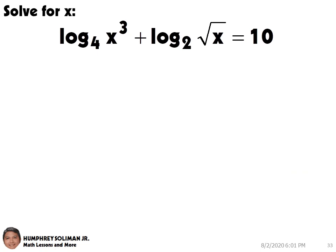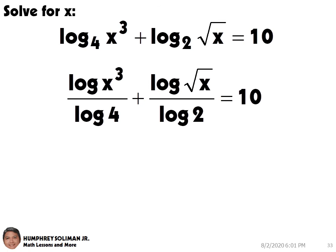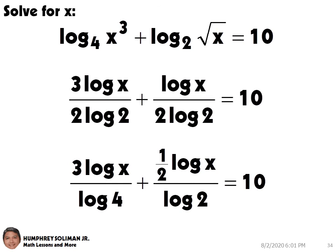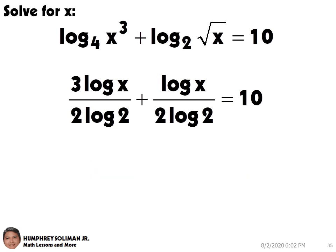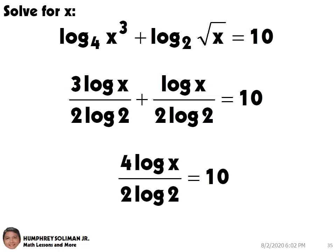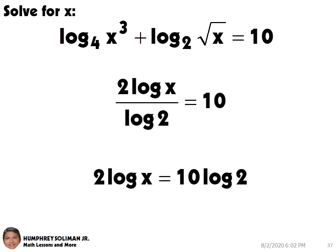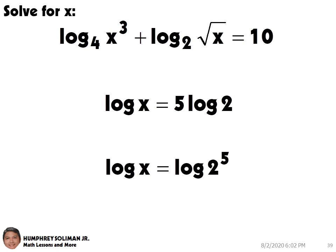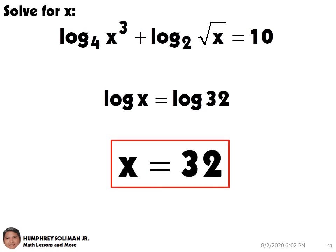Let's try another example. Here, we can use the change of base for the two terms on the left side of the equation. And then, write the exponent of x in front of the logarithm, and rewrite the square root of x. Next, we can write log of 4 in the denominator of the first term as 2 log of 2, and simplify the second term. Now that we have the same denominators for the terms on the left side, we can combine those terms together into a single fraction. And then, we can multiply both sides by log of 2. Next, we can divide both sides by 2. Next, we can write the 5 in front of the logarithm as an exponent of 2. Next, we can write this without logarithms. So, x equals 32.